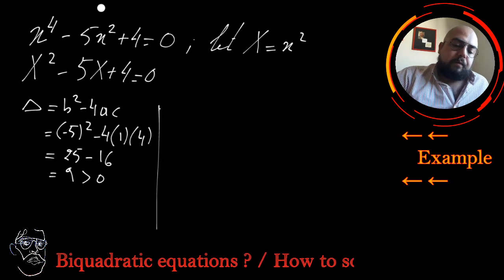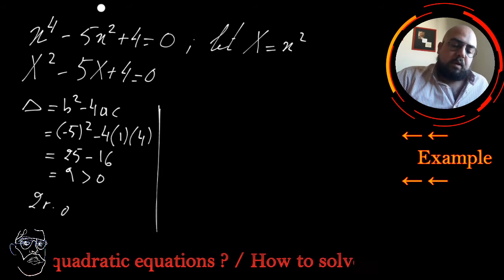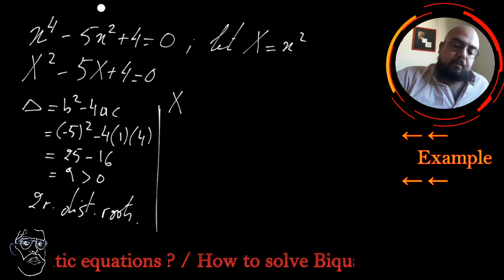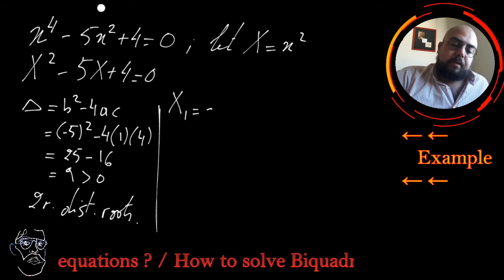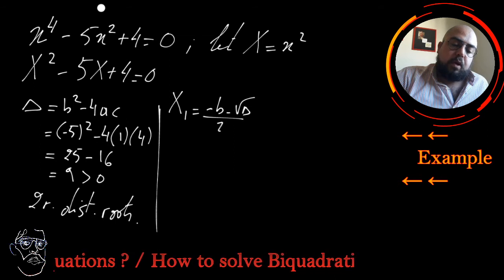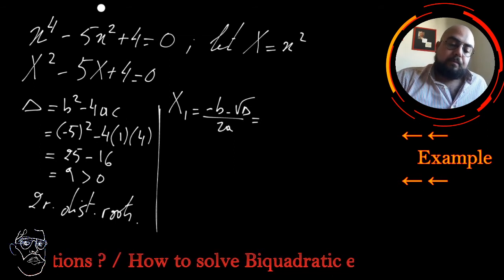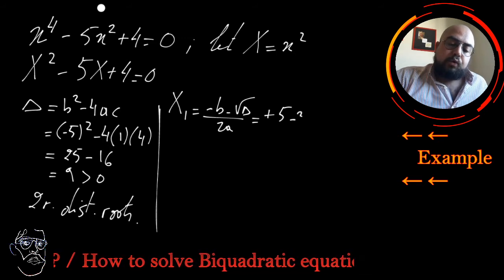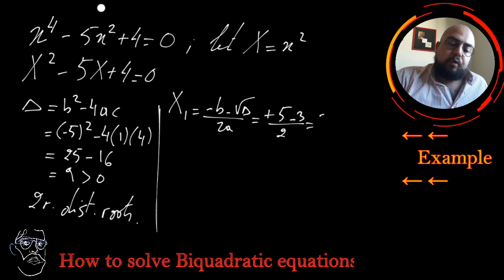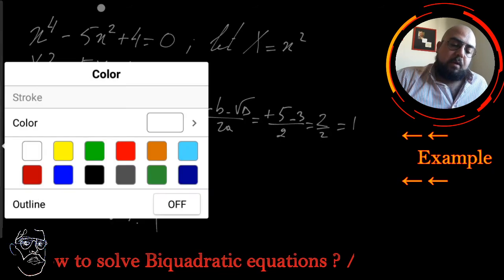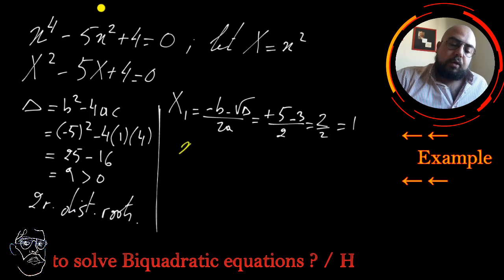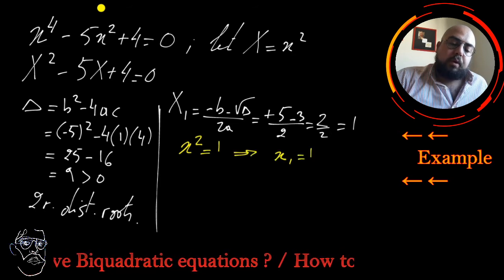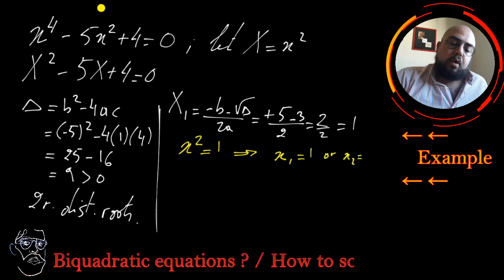The roots are found using x = (-b ± √delta) / 2a. For X₁: (5 - 3) / 2 = 2/2 = 1. So from this, x² = 1, which means x₁ = 1 or x₂ = -1.